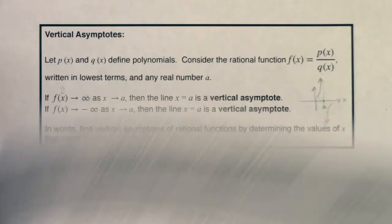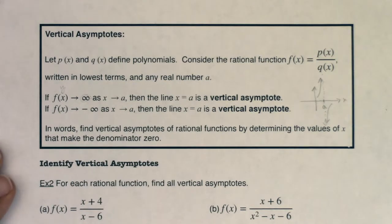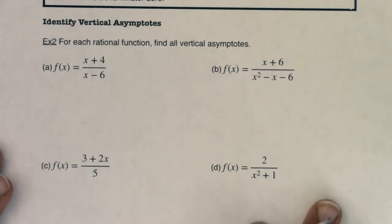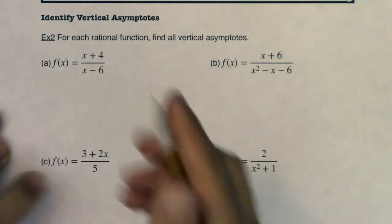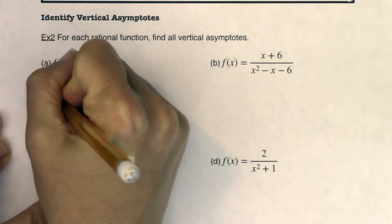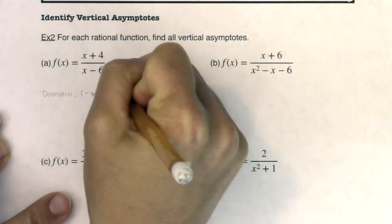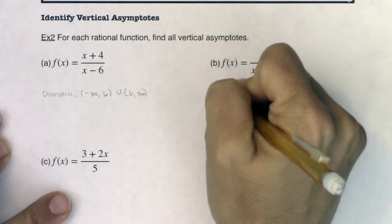So let's practice that with the same four functions we were dealing with in example one. So I'm going to scooch this paper up so I can see my four functions, and then we're going to talk about the vertical asymptotes. All right, now I just want to remind us, our domain here was negative infinity to the six, and then six to infinity.